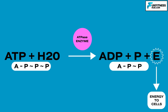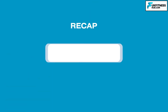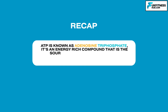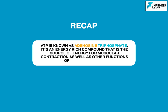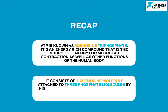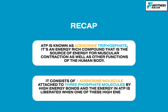Once ATP has been broken down to release its energy, it can no longer supply any further energy and therefore needs to be re-synthesized. ATP is known as adenosine triphosphate — it's an energy-rich compound that is the source of energy for muscular contraction, as well as other functions of the human body. It consists of one adenosine molecule attached to three phosphate molecules by high-energy bonds, and the energy in ATP is liberated when one of these high-energy bonds is broken.